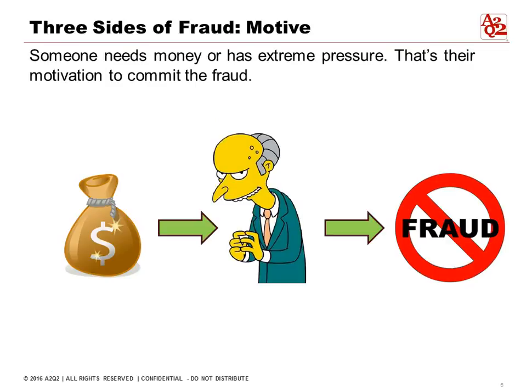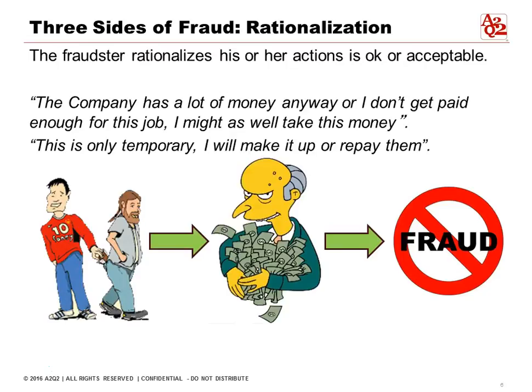Motive is when someone needs money, has extreme pressure, or even the perception that they need money. We often see otherwise innocent people whose families are in trouble — whether it's medical bills or something happening within the family — that creates motivation to commit fraud. It could also be the desire to live a particular lifestyle. People living well outside their means is usually one of the first indicators of fraud.